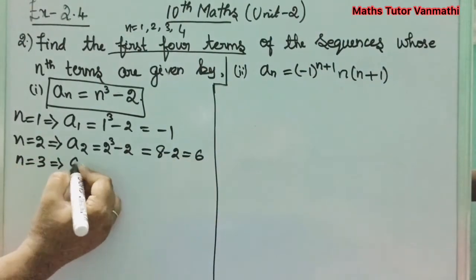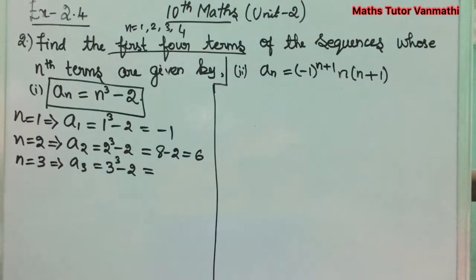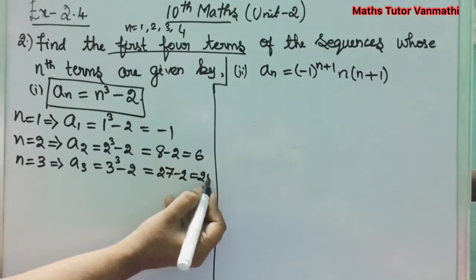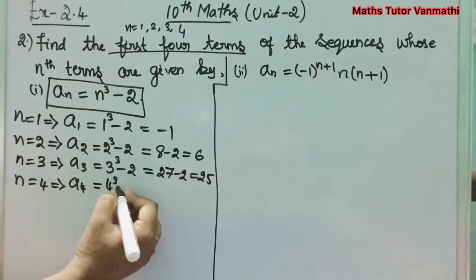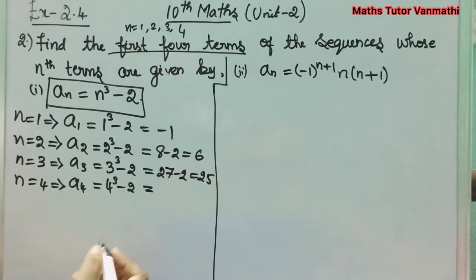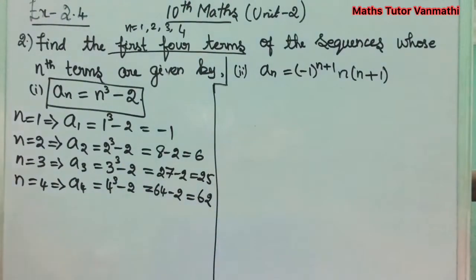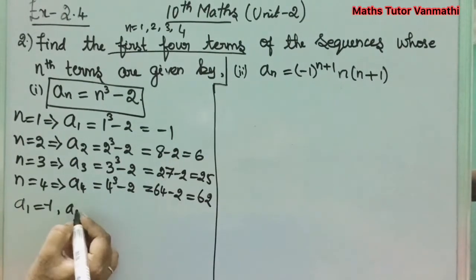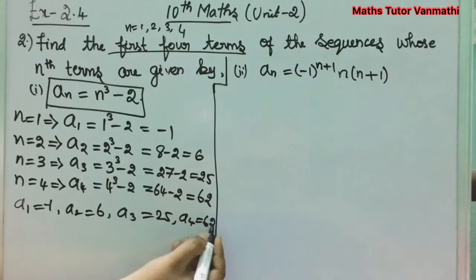For n = 3: a_3 = 3³ - 2 = 27 - 2 = 25. For n = 4: a_4 = 4³ - 2 = 64 - 2 = 62. So the first 4 terms of subdivision 1 are: a_1 = -1, a_2 = 6, a_3 = 25, and a_4 = 62.